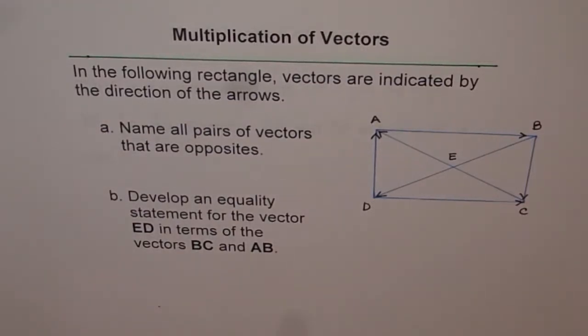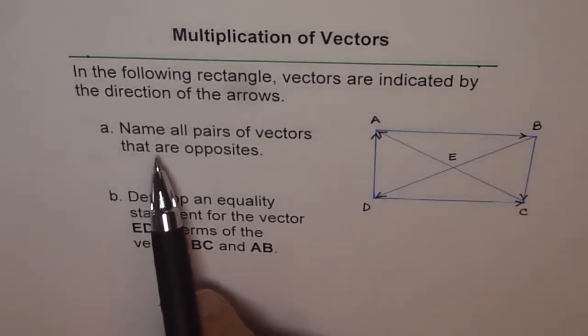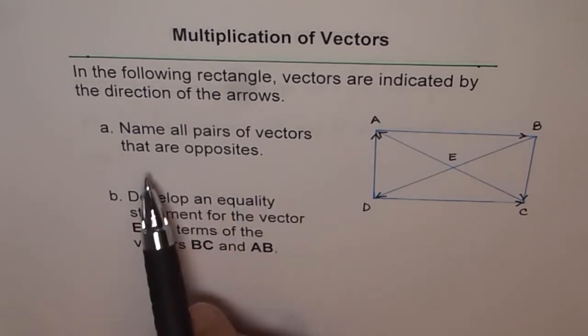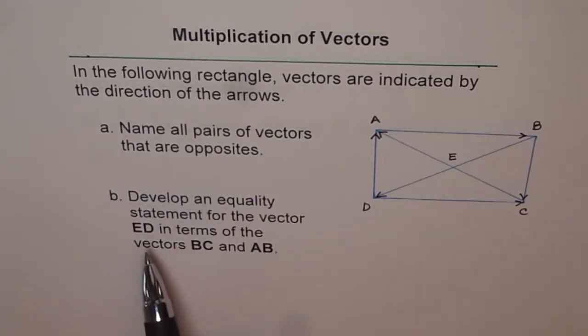Here is a very interesting question. In the following rectangle, vectors are indicated by the direction of the arrows. It has two parts. Part A is, name all pairs of vectors that are opposite. And part B is, develop an equality statement for the vector ED in terms of the vectors BC and AB.